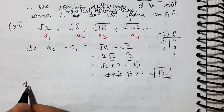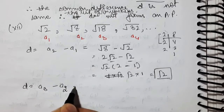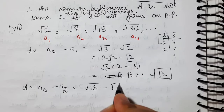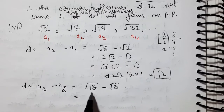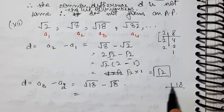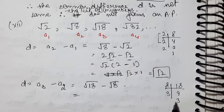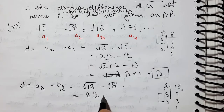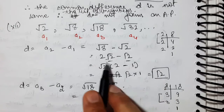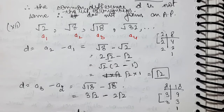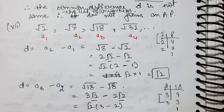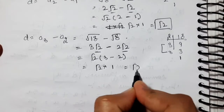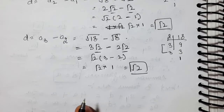Now check D = A3 minus A2 = √18 minus √8. Prime factorization of 18 gives 2×9 = 2×3×3, so √18 = 3√2. And √8 = 2√2. So 3√2 minus 2√2 = (3 minus 2)√2 = √2. In the second case also D = √2.